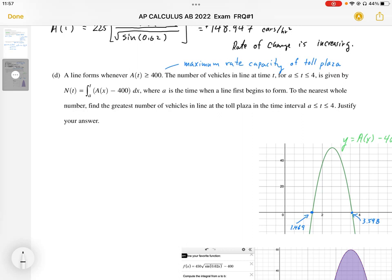The number of vehicles in line at time T, for A < T < 4, is given by N(T) equals the integral from A to T of (A(x) - 400) dx, where A is the time at which the line begins to form. First, we need to figure out when A happens - when does A(x) pass 400?